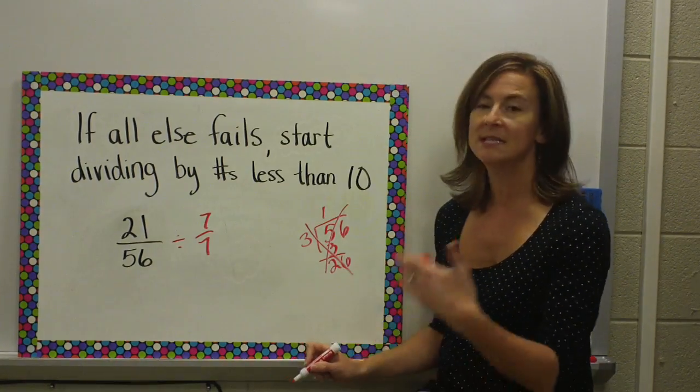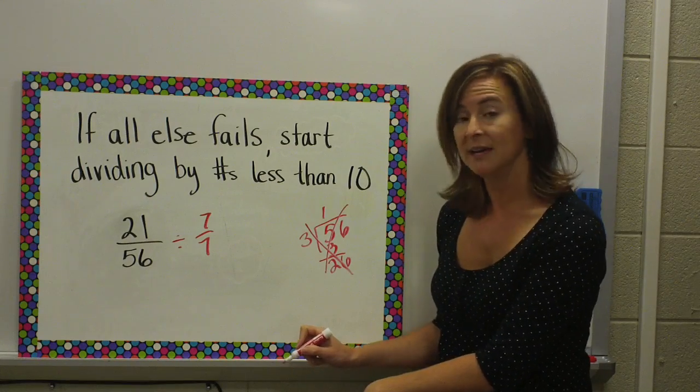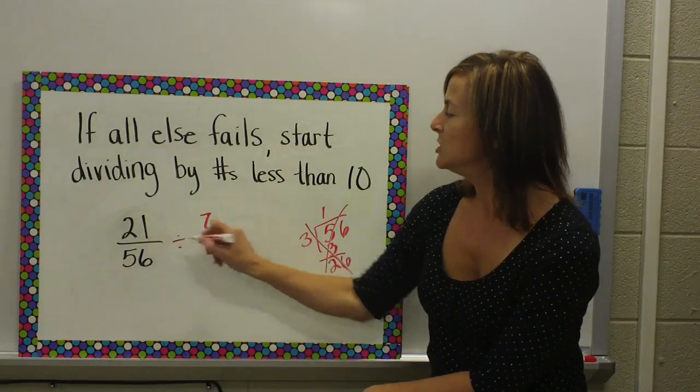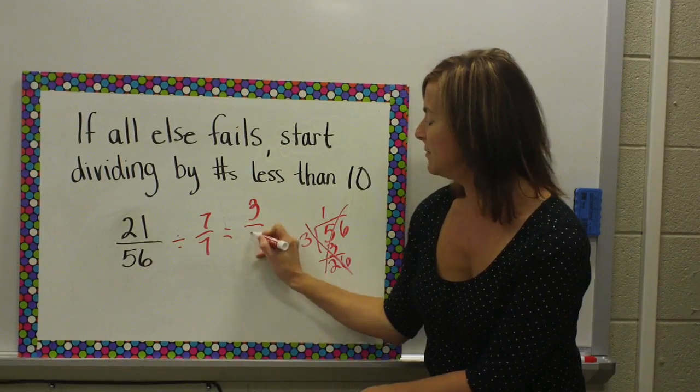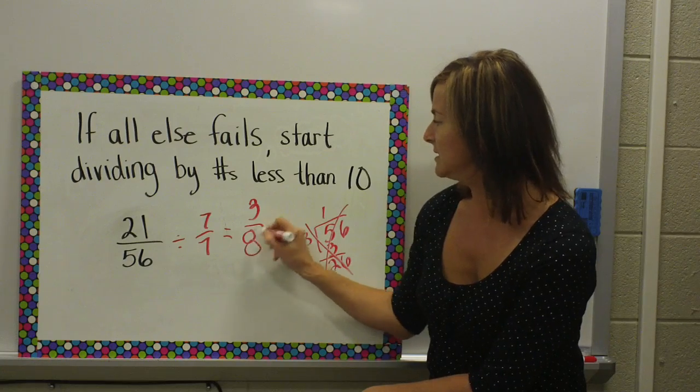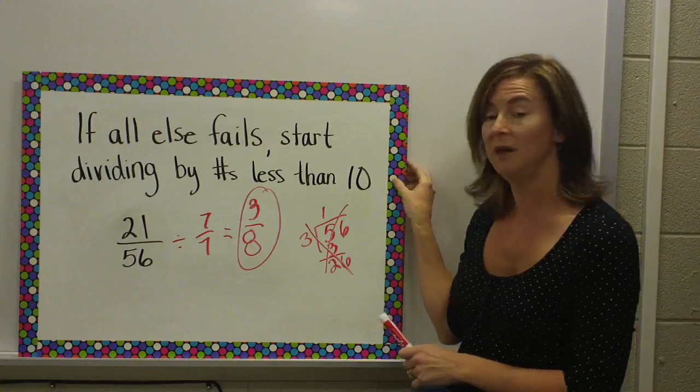21 divided by 7 is 3. 56 divided by 7 is 8. Simplest form for 21 over 56 is 3 eighths.